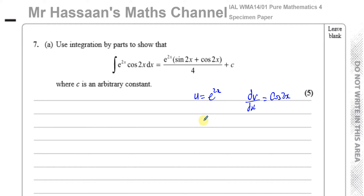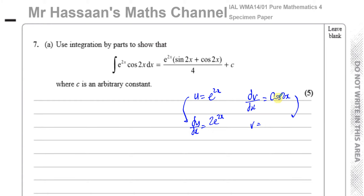So one is called u, the other dv/dx. Normally u is the one that breaks down; here neither does, so it doesn't matter too much. I find du/dx = 2e^(2x) by differentiating. For v, I integrate cos(2x): the integral of cos(2x) is (1/2)sin(2x), since you divide by the derivative of what's inside. I don't need the plus c here — I'll do that in the main question.